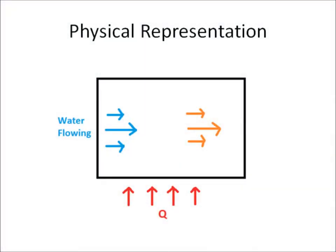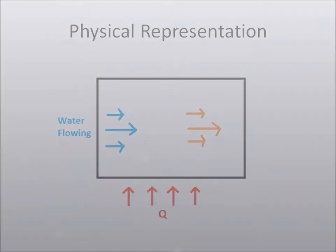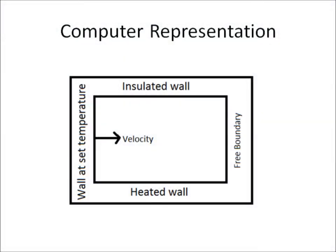The problem we are looking at involves water flowing through a tube from the left side and out the right. As the water passes through the tube, it gets heated by a heat source. We represent this problem on the computer by setting different boundary conditions for each side of our system. The left and right sides represent a free-flowing fluid moving through a tube. The bottom represents our heating source, and the top is an insulated wall that doesn't allow heat to escape.